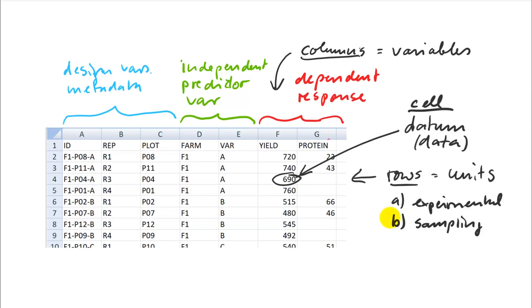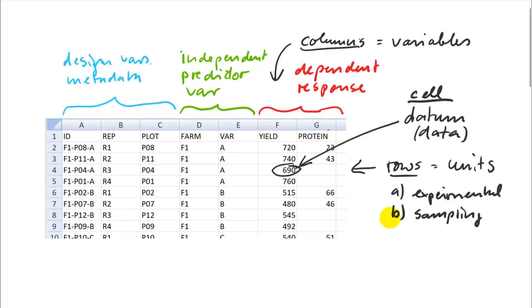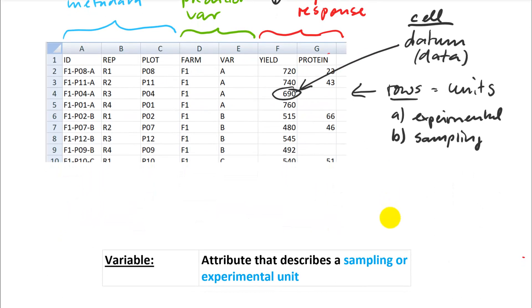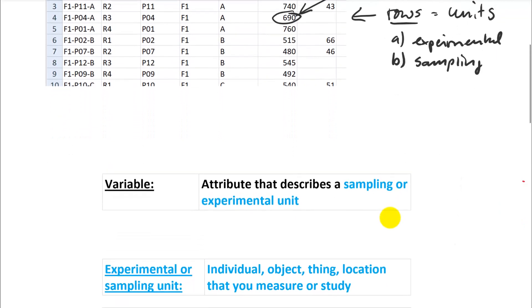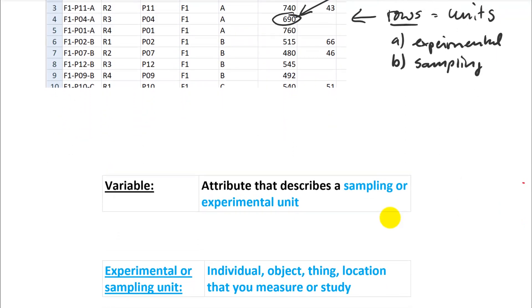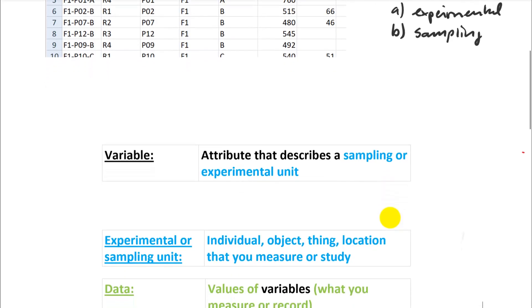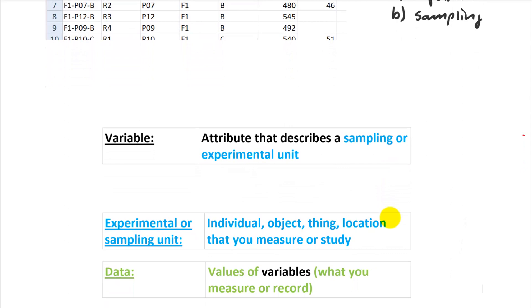To round this off, I have some formal definitions for you. And the first one is what a variable is. So that's an attribute of your experimental or sampling unit, so something that describes your sampling or experimental units. So the experimental sampling units themselves, those are the individuals, objects, things, locations. So whatever you measure, or what you study, those are your units. And then lastly, we have data. Data are simply the values of the variables.